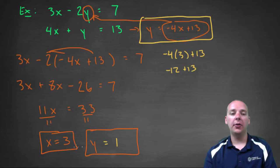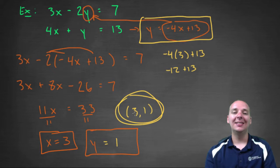So that ordered pair (3, 1) should be the solution to the system.